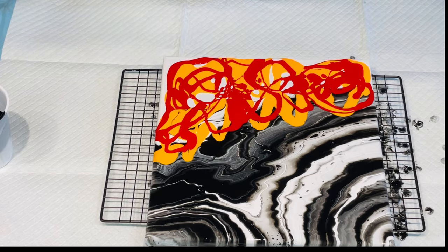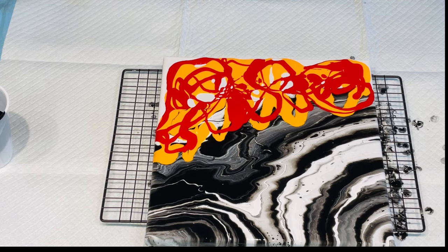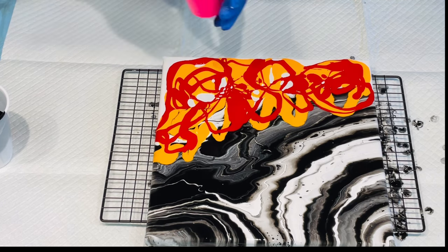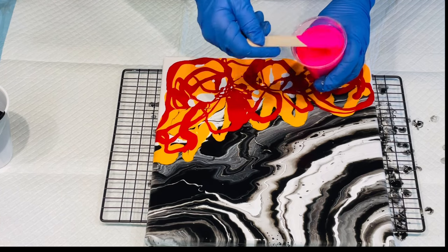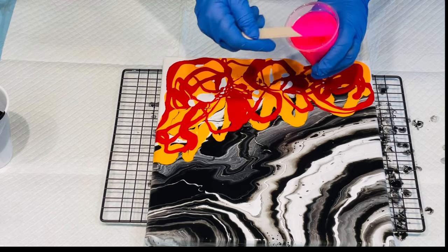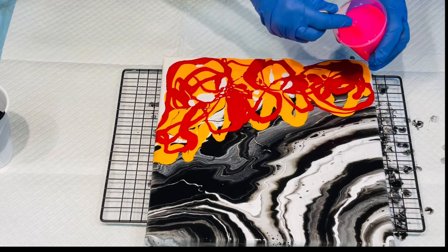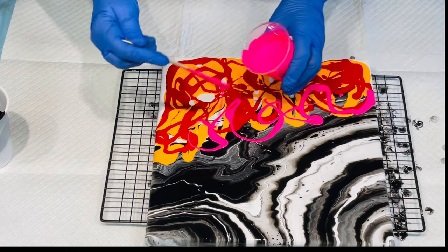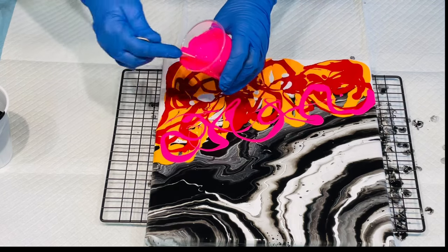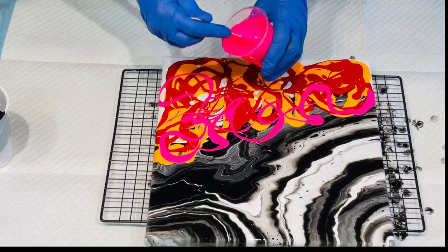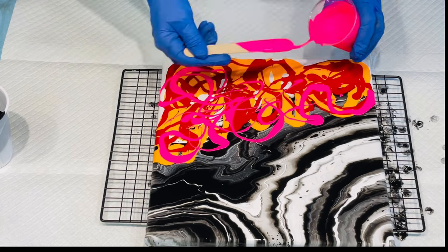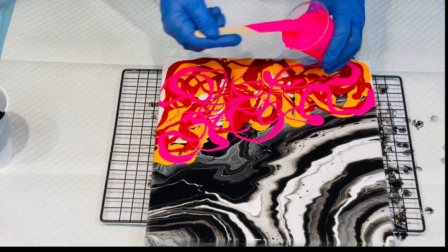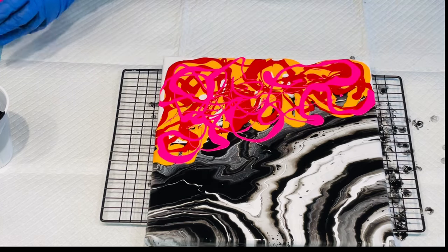I'm going to use fluorescent pink, fluoro fuchsia. I think I used fluoro fuchsia in the previous pour. I'm really going to add a pop of color to this. I'm not going to use too much more.